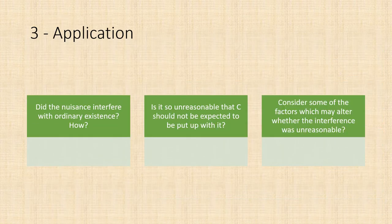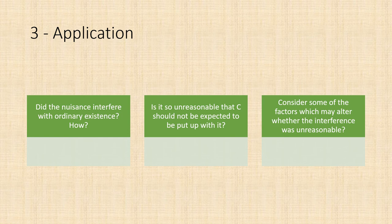When applying the law, consider: did the nuisance interfere with ordinary existence — remember, not sensitive claimants. Be explicit about how the nuisance affected the claimant and its actual effect. Ask whether it is so unreasonable that the claimant should not be expected to put up with it — you can make that judgement and use your instinct based on what you have studied. Consider the factors which may alter whether the interference was unreasonable, remembering not every factor will apply. Some favour the claimant, some the defendant, and you make a balanced argument after considering all relevant ones.